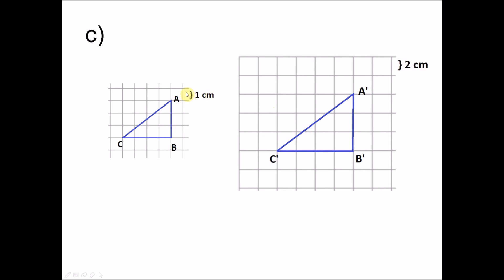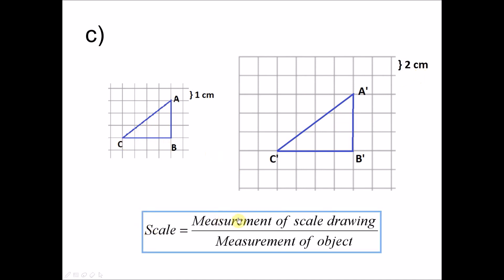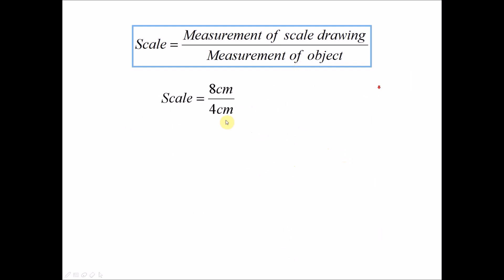What is different here is the grid size. The grid is one by one centimeter for the object, and two centimeter by two centimeter for the scale drawing. We still use the formula, but this time we must measure the actual length, not just count units. Taking one side of the scale drawing: two plus two plus two plus two equals eight centimeters. The corresponding side of the object: one plus one plus one plus one equals four centimeters. So eight over four — simplify by dividing by four — gives two over one. Write in ratio form with one on the left: divide by two on both sides to get one is to one-half.